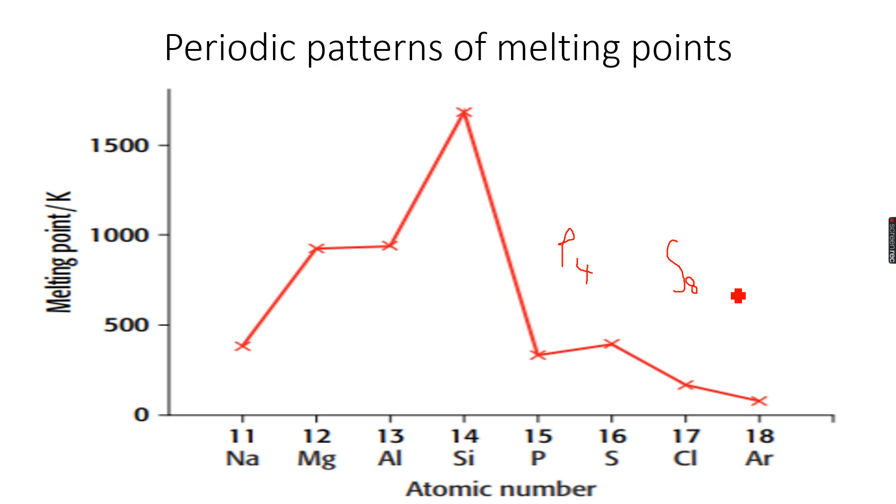Therefore, the van der Waals forces between sulfur molecules will be stronger than the van der Waals forces between phosphorus molecules. That's why sulfur has a higher melting point than phosphorus. Chlorine has a lower melting point than both phosphorus and sulfur because chlorine exists as Cl2, it's diatomic, so it's smaller and hence has a lower melting point.